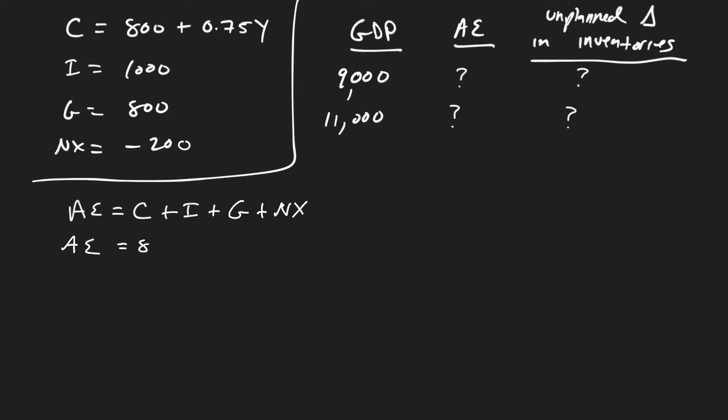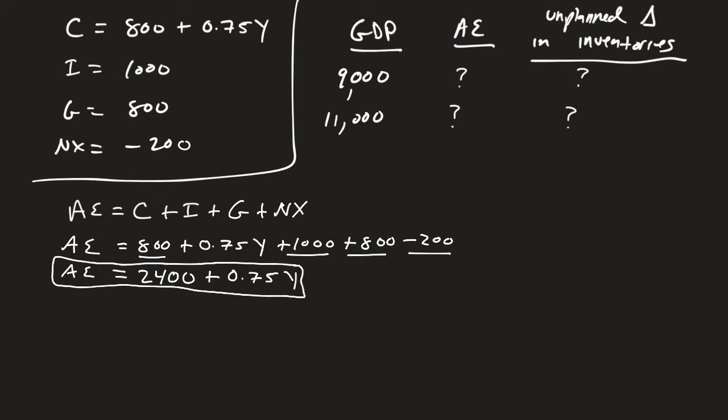So let's go ahead and plug this in. Aggregate expenditures are going to equal 800 plus 0.75y plus 1,000 plus 800 minus 200. Let's go ahead and combine all the stuff that we know. So aggregate expenditure is going to equal that 800 plus 1,000 plus 800 minus 200, and so that's going to be 2,400 plus 0.75y. So I know that this is going to be my aggregate expenditure function.